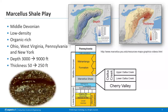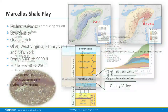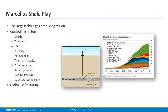The Basal Oafta Creek lies below the lower Oafta Creek Formation and above the Cherry Valley Limestone. The Marcellus play is the largest shale gas producing region in the U.S., even larger than the Permian Basin.